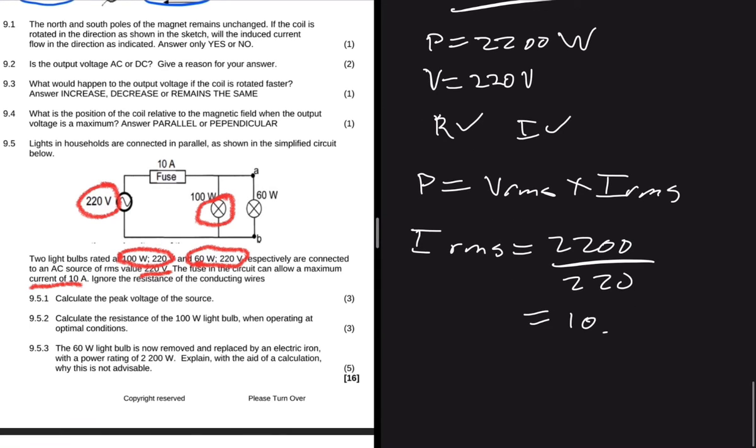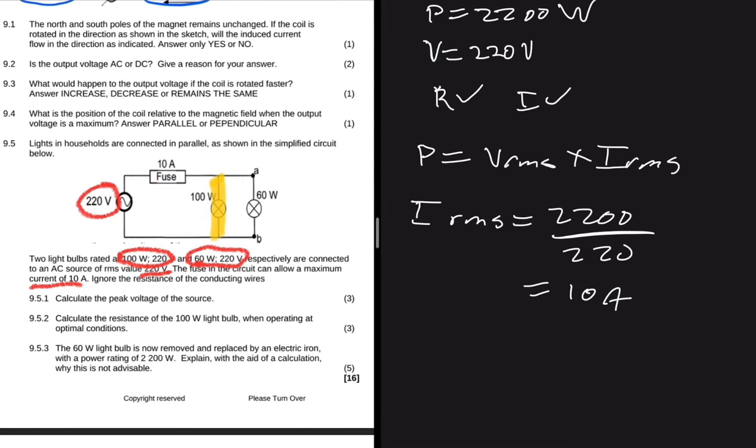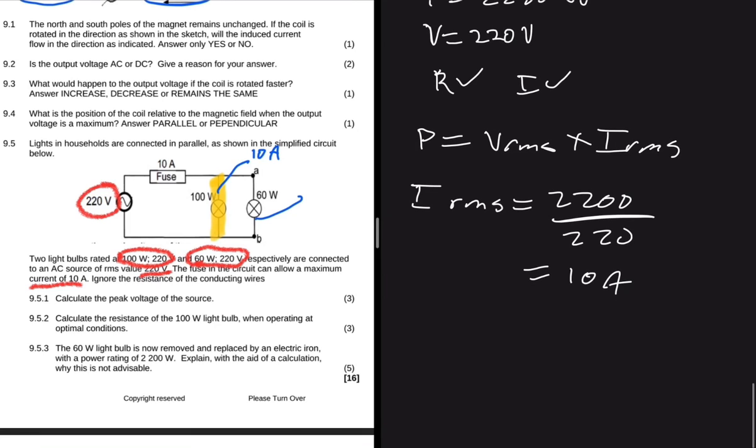So our I_rms will be equal to the power which is 2200 divided by 220 and this will be equal to 10 amps. So on this line here that I'm circling now in yellow, on that line there we're going to have 10 amps. But then we also have this line here which will have its own current. We can actually calculate that current because we know the power there and we know the voltage. So the current of the 100 watt bulb will be equal to the power divided by 220.